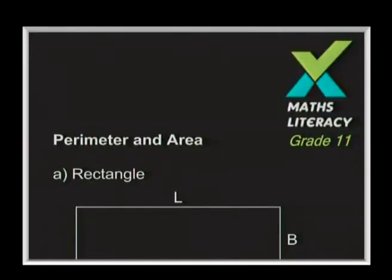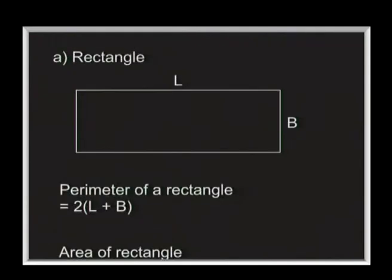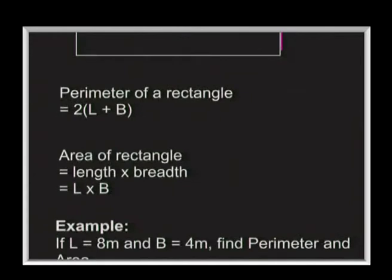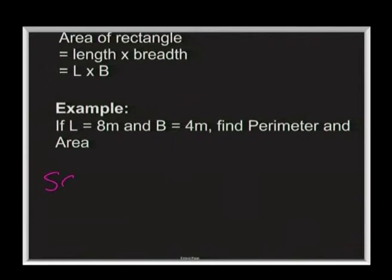Let's go through and do some simple calculations with just our simple shapes. Every question that you get, you can break down into simple shapes — your square, triangle, rectangle, and circle. A square has got all four sides equal, so we can consider it a special type of rectangle where your length is equal to your breadth. All the formulas that apply to the rectangle can be applied to the square.